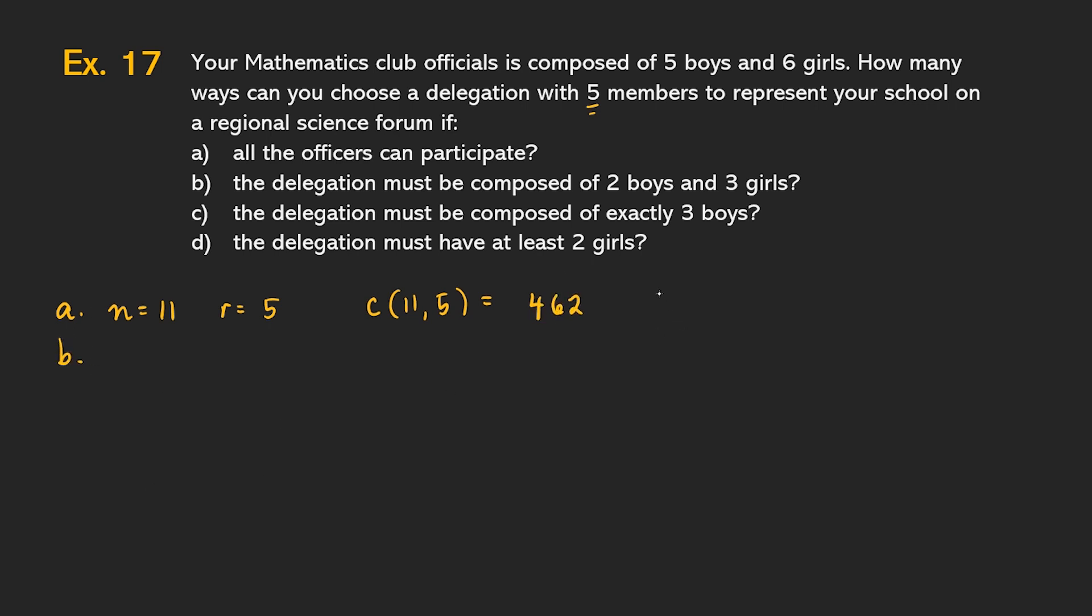Next, letter B. 462 ways. Letter B, the delegation must be composed of two boys and three girls. So, exactly, two boys and three girls. In this case, we will be using the multiplication principle. Because we have two operations to do. Yung una, pipili mo tayo ng boys, yung two boys. Yung pangalawang operation naman, we're going to select the three girls. The first operation, selecting two boys out of five can be done in combination of five taken two. That's how many ways we can select two boys from five. And then, the second operation, which can be done in six taken three. Combination of six taken three at a time. So, by the multiplication principle, you'll have to do is to multiply this.